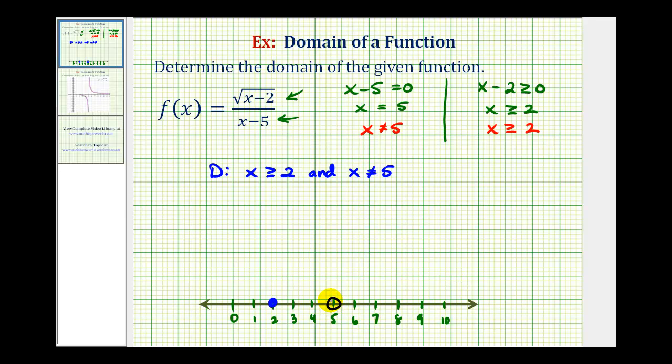But because we have to exclude five, we would draw our arrow from here to the open circle on five, and then continue it to the right of positive five. This would be the graph of the domain of the function.